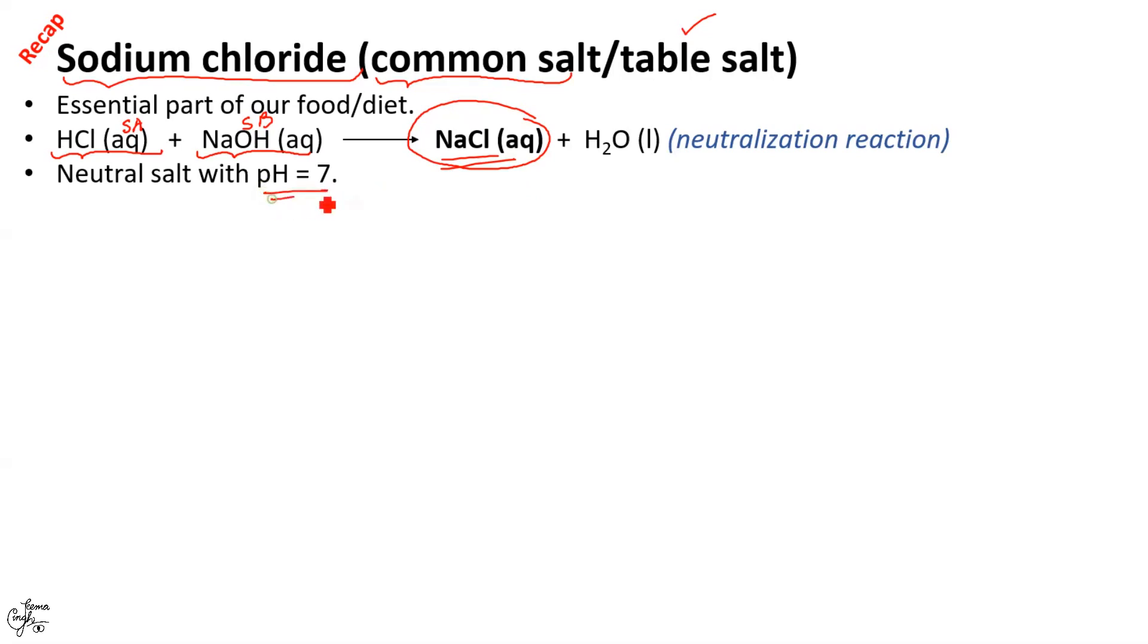Common salt can be obtained from this reaction by removing water by simple method of evaporation. The iodized salt that we use in our home contain a small amount of iodine which is added to NaCl to prevent the occurrence of a disease known as goiter with which I am sure you are familiar.